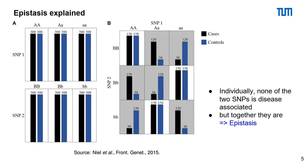This means that individually, none of the two example SNPs is disease-associated, but together they are. However, we do not exclude SNPs which can be independently associated to a disease — these SNPs can still be involved in epistasis.